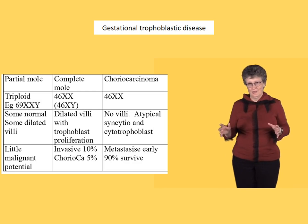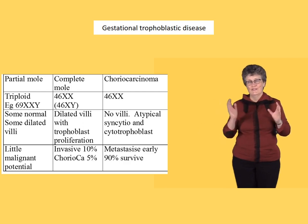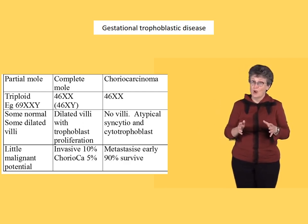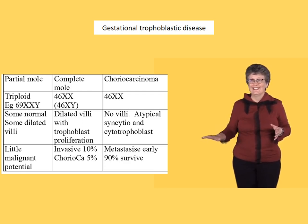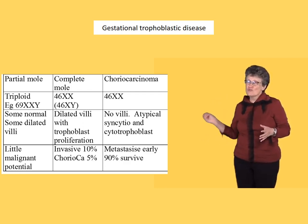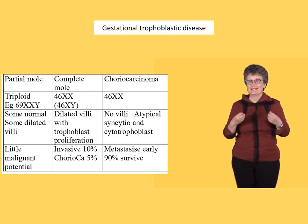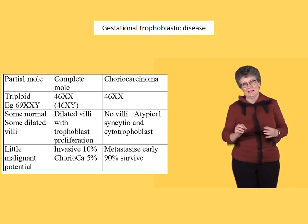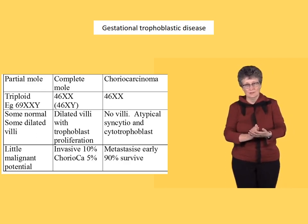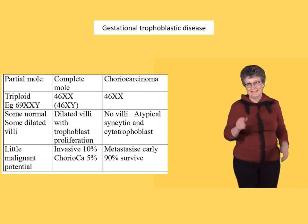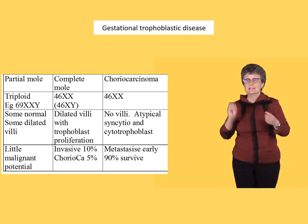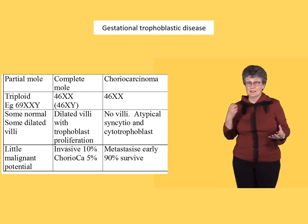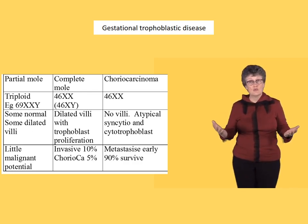Let's think about the third column now — choriocarcinoma. It will have 46 male parent-derived only chromosomes. It has no chorionic villi; we've gone past all that. It just has really rapidly proliferating syncytiotrophoblasts and cytotrophoblasts — malignant cells. Now the job of these cells is to invade vessels. This means that choriocarcinoma spreads really early; it metastasizes to the lung and the brain really early.